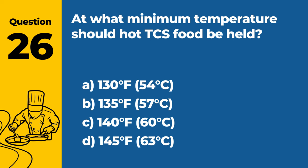Question 34: What temperature range defines the danger zone for bacterial growth in food? Answer: B. 41°F to 135°F (5°C to 57°C). The danger zone for bacterial growth in food is between 41°F and 135°F. Within this range, bacteria can grow rapidly, increasing the risk of foodborne illness.